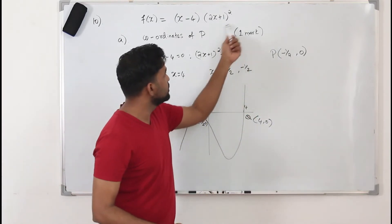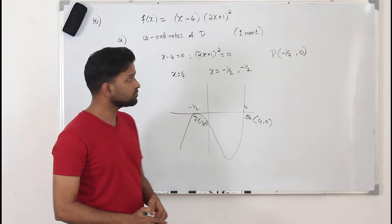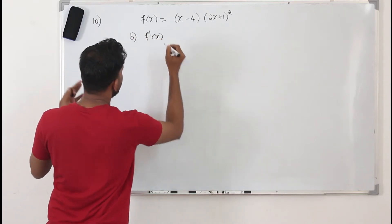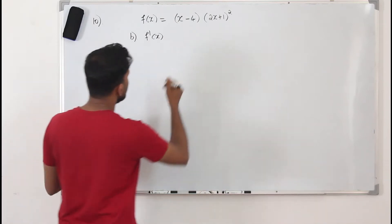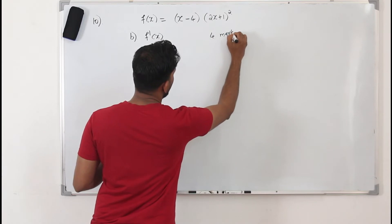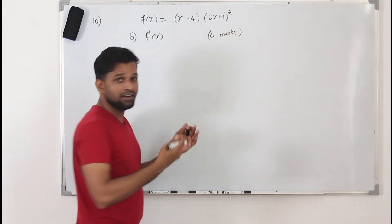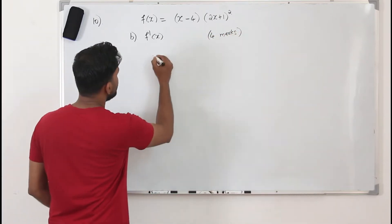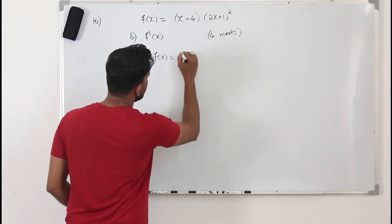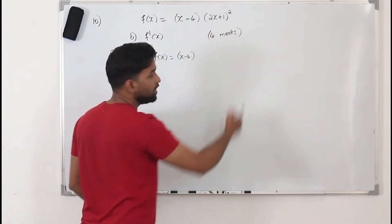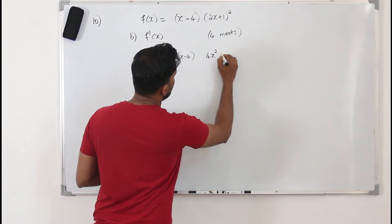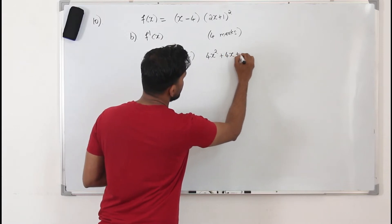That's why part A carries only one mark. For part B, they want you to find F'(x), the first derivative, and this has 4 marks. So we take the function F of x and keep x minus 4 as it is. For the squared term, apply the formula (a + b)² equals a² + 2ab + b².